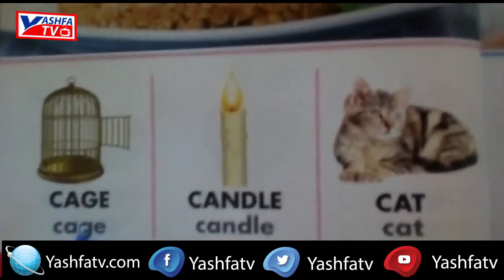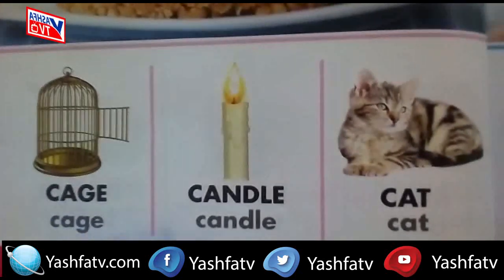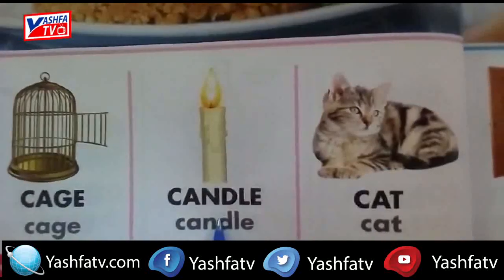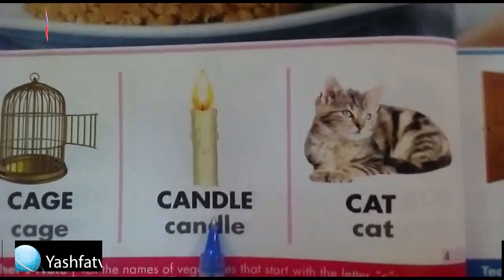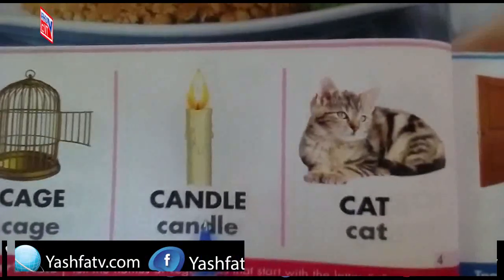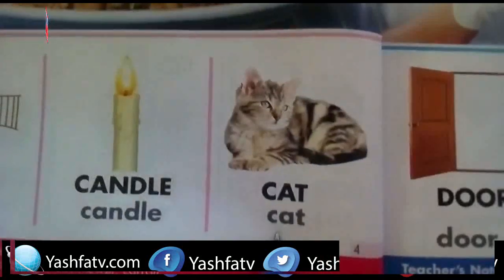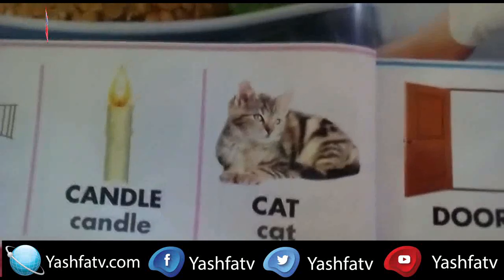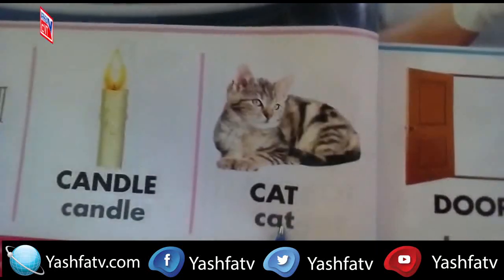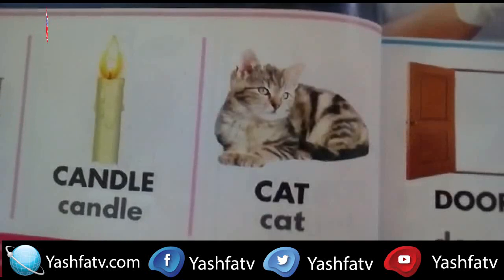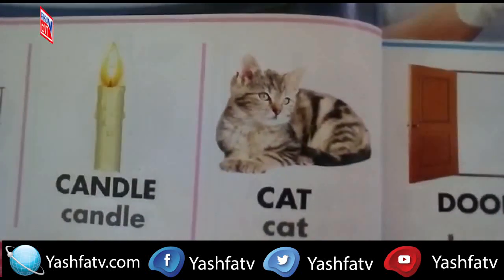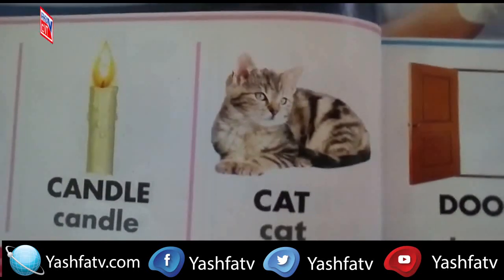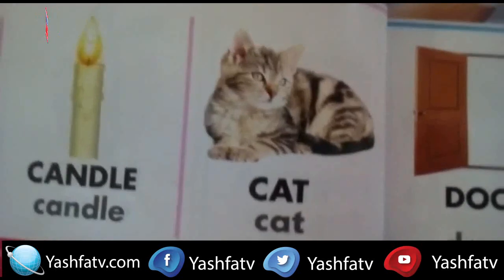Look at this picture — it's a cake. In the next picture there is a cage, C for cage. In the next picture there is a candle, C for candle. In the next picture there is a cat, C for cat.